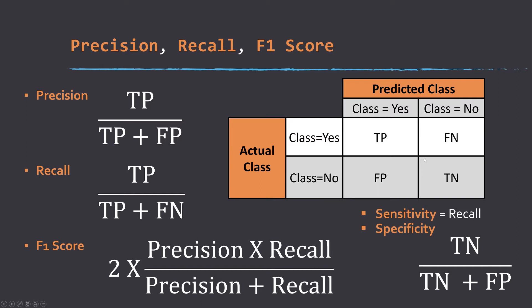The diagonal represents correct measures, and the other diagonal is incorrect. A false negative is something that was a wetland but you called it an upland. A false positive is something you called a wetland but was actually an upland. Those are your four options — types of error and correct measurements.